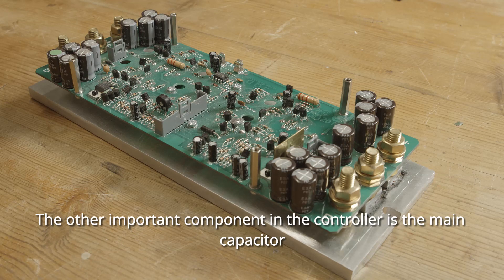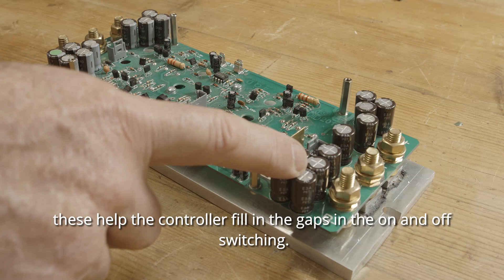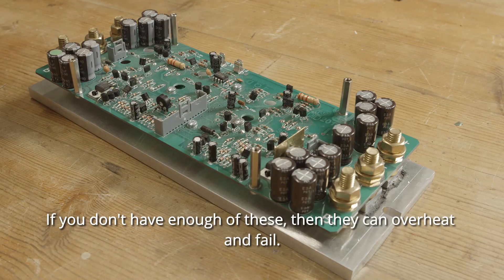The other important component in a controller is the main capacitor. These help the controller fill in the gaps in the on and off switching. If you don't have enough of these, then they can overheat and fail.